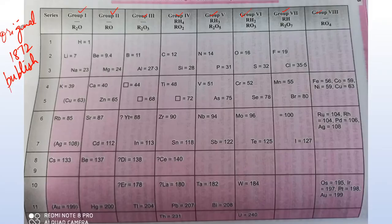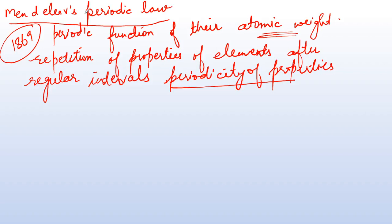Let's talk about Mendeleev's periodic table and its characteristics. There was a group of groups — 1, 2, 3, 4, 5, 6, 7, 8. The original Mendeleev table was published in 1872. This table was later modified; at the time, Henry had not yet made his discovery, so certain things were not known about it.